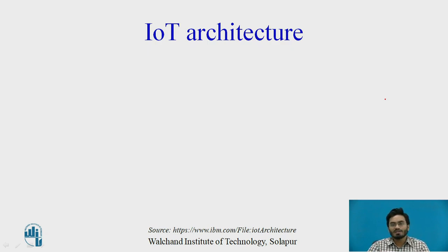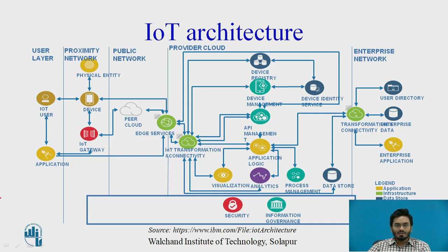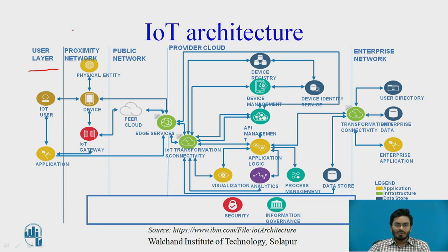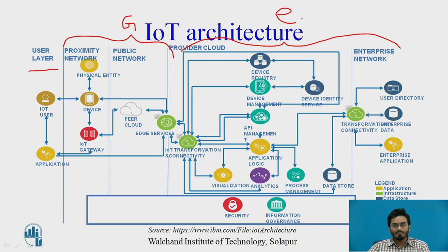When we understand what IoT is and how its architecture differs from wireless sensor networks, the key difference is that the complete IoT architecture can be distributed into three or four sections: the first is the user layer, also called the edge computing node level; the second is the gateway or controller layer; and the third layer relies on the Internet.